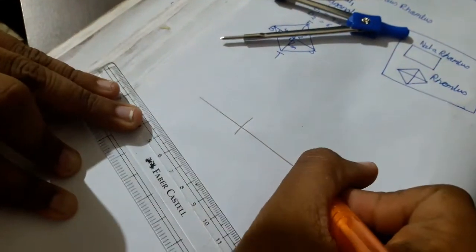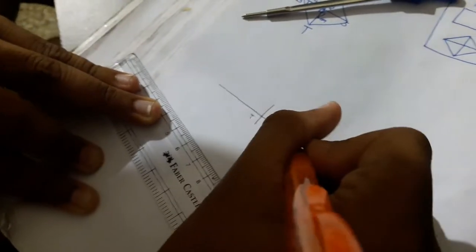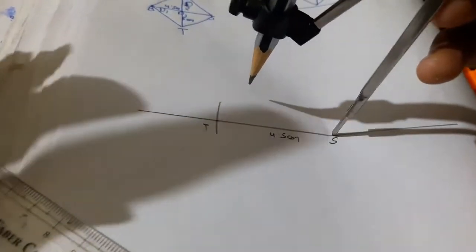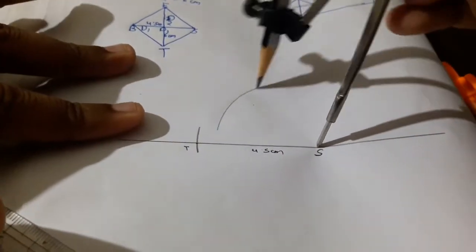Now name this point S and this point T. Keep it as 4.5 cm. Now guys, you have to draw a perpendicular bisector. That is by taking more than half of the length of the 4.5 cm that you have taken and then cutting it from both sides.